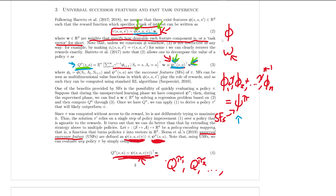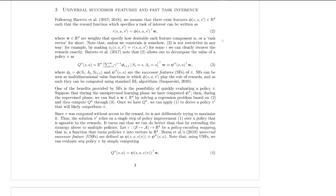Now we can move on to the next big part of the paper, which deals with a weakness of successor features. That weakness comes from this formula — remember this equation is essentially an assumption that we're making. We're assuming that our feature vectors can be linearly combined with w to get the reward function. But this might not actually be the case. For example, if we have really bad features — like in chess our feature vector is just always zeros and doesn't tell us anything about the state — we're not going to be able to learn the reward function from that. So we need good features.